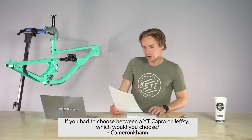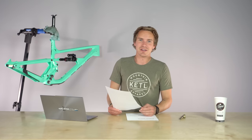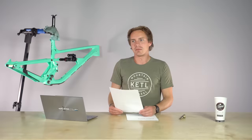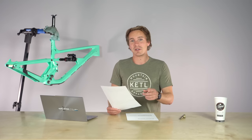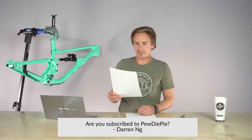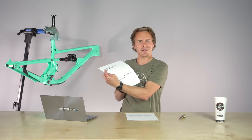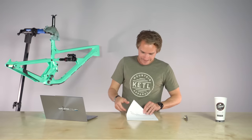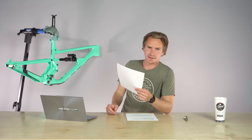If you had to choose between a YT Capra or Jeffsie, which would you choose? I would choose the YT Jeffsie 29. I like trail bikes. I like 29ers. I like that travel range. Yeah, I like YTs. I think they're sweet. And I think that Christopher Walken's video that YT did was like one of the greatest content pieces in the mountain bike industry ever. I've watched it a million times. It's badass. Check that out. Are you subscribed to PewDiePie? PewDiePie? Is that even spelled right? Oh my God, dude! Is it okay to neglect my children to go mountain biking? I don't know. They're not my kids. Go ahead. Jeff, yes or no? Always yes. I'm a yes guy. Yes!